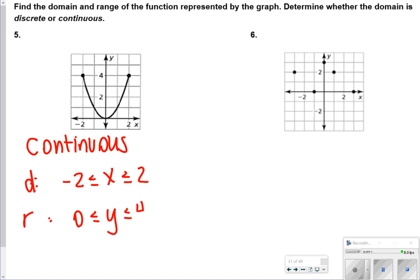For number 6, this domain is discrete, because we have points here. The domain inputs, we can have negative 3, negative 1, 0, and 1, and there's also a 3 right here too, just look closely. And then the range is, we have a 0, we have a 2, and then we also have a 3 at the very top. So there are your answers for 5 and 6.